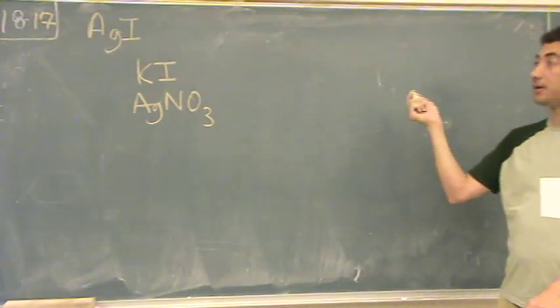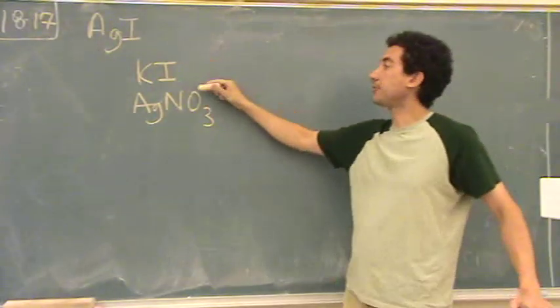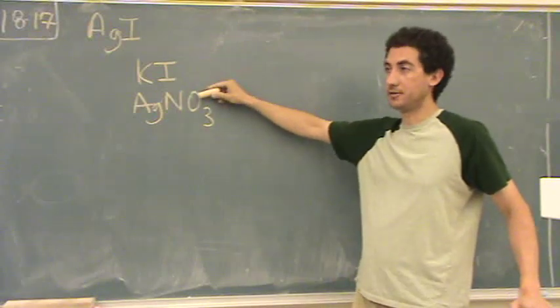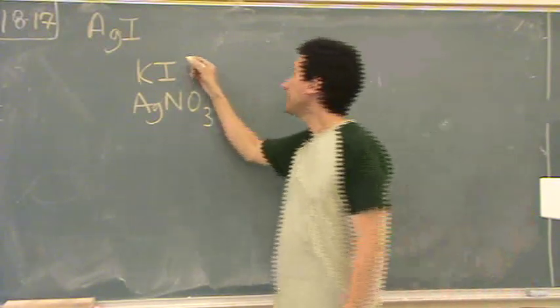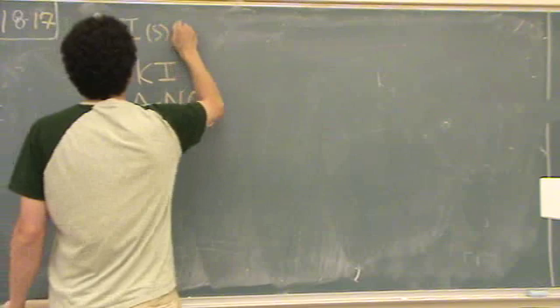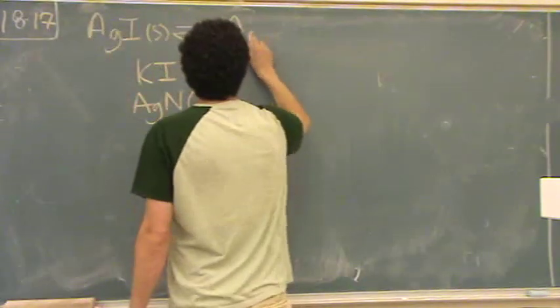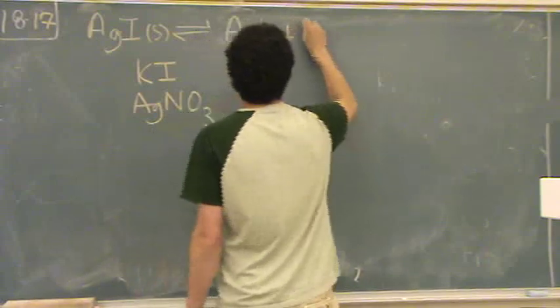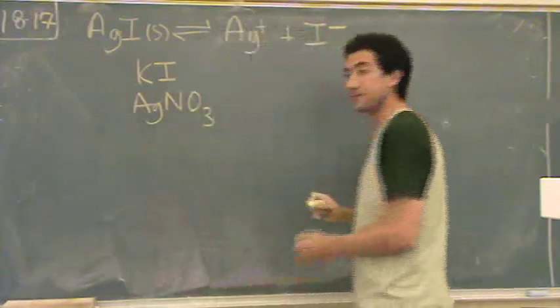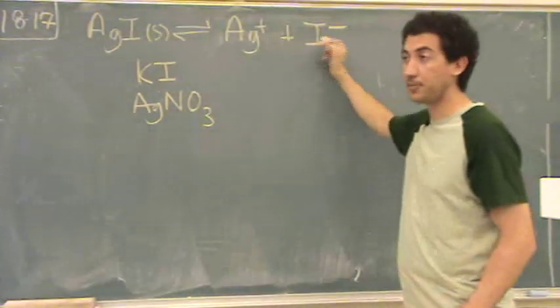We put this in water. We want to know the effects when you also add one of these two. So for the solid, you write your standard KSP: Ag⁺ + I⁻. These are both aqueous in the products.